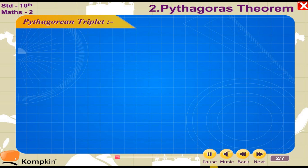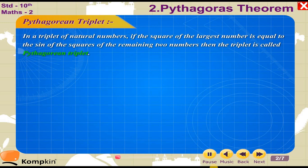Pythagorean Triplet: In a triplet of natural numbers, if the square of the largest number is equal to the sum of the squares of the remaining two numbers, then the triplet is called a Pythagorean triplet. For example, in the triplet 11, 60, 61: